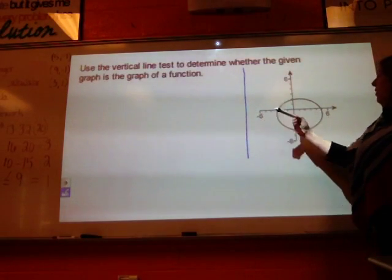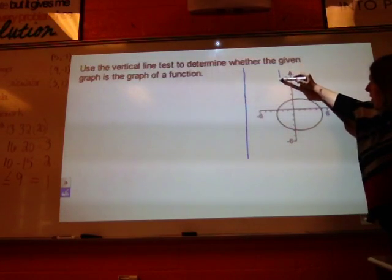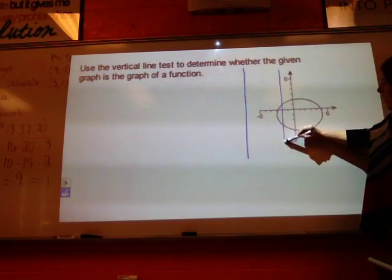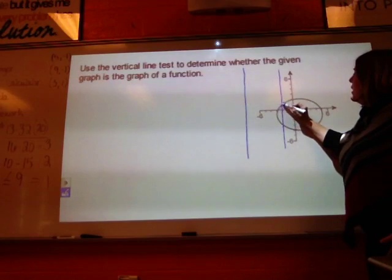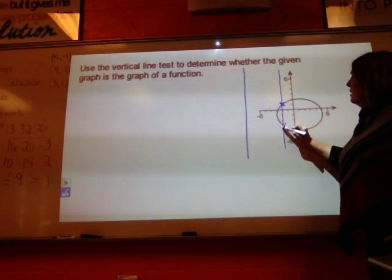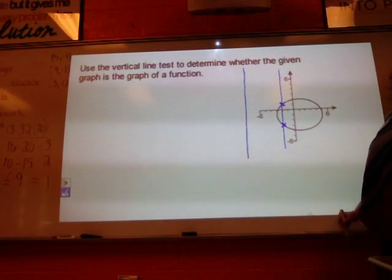when I cross this circle, when this vertical line gets right here, that vertical line is crossing that graph here and here. And that's more than one time at any one spot.